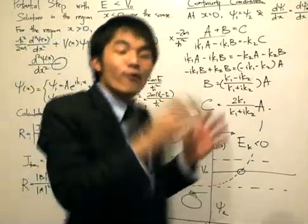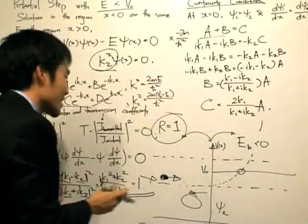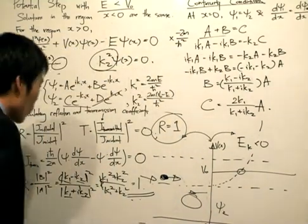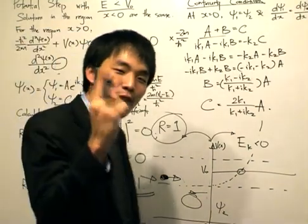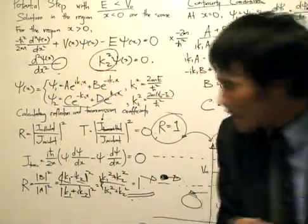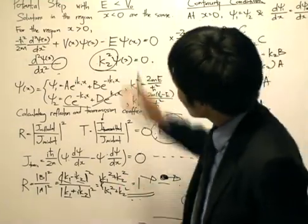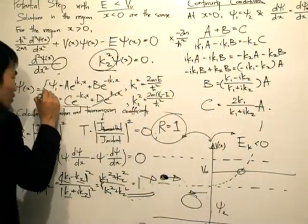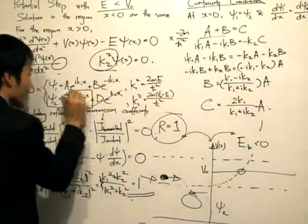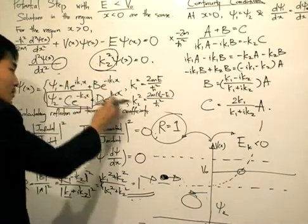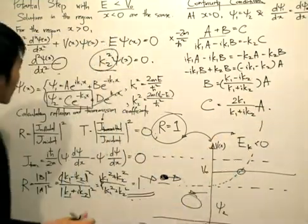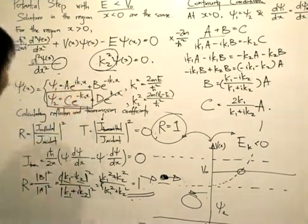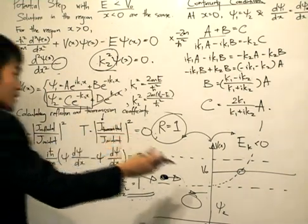This seems to give the same picture as classical mechanics, but there is one key fact we're missing — one that comes from the solutions to the Schrödinger equation. We eliminated one solution because it diverges. But we should note that the other solution, e to the minus k₂x, does not diverge: since k₂ is finite, as x tends to infinity, e to the minus k₂x tends to zero.